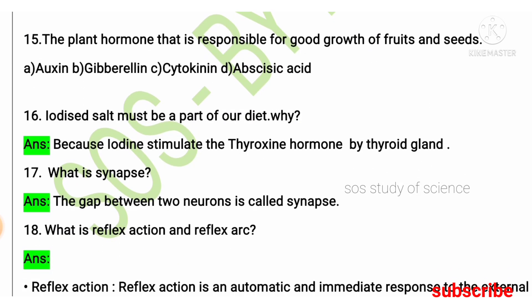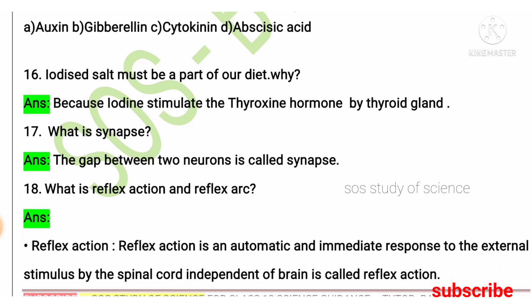Iodized salt must be a part of our diet. Why? It is because iodine stimulates the thyroxine hormone. When thyroxine is stimulated by the thyroid gland, it helps in overall metabolism of our body. Doctors advise especially patients suffering from goiter to take iodized salt. Also, what is a synapse? There are millions of neurons in our body, and between any two neurons there is a small space — the gap between two neurons is called a synapse.